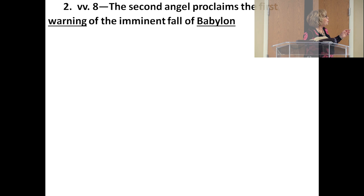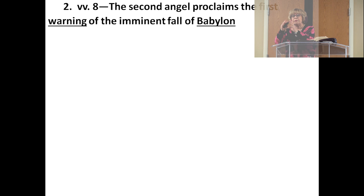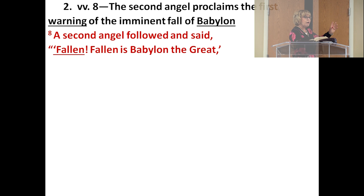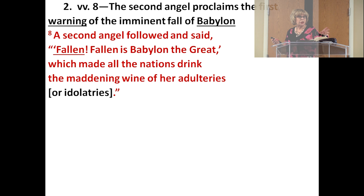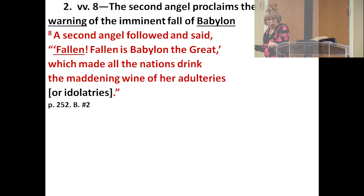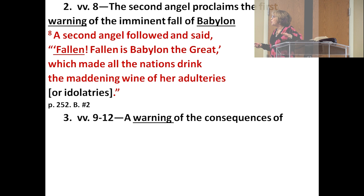There is a second angel in chapter 14 who proclaims the first warning of the imminent fall of Babylon: 'Fallen, fallen is Babylon the great, which made all the nations drink the maddening wine of her adulteries.' Adulteries is a metaphor for idolatry. Then in chapter 14, verses 9 through 12, a third angel warns of the consequences of taking the mark of the beast. In Revelation, the beast is the Antichrist. The prophet says everybody has to take a mark on their hand or forehead.